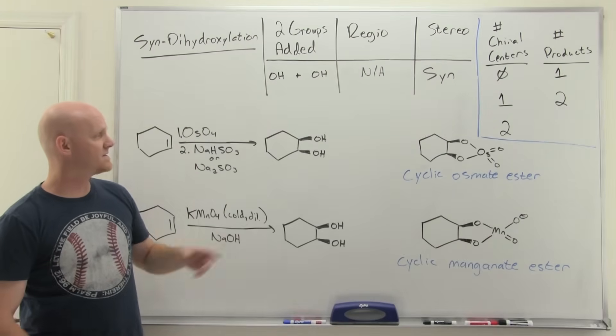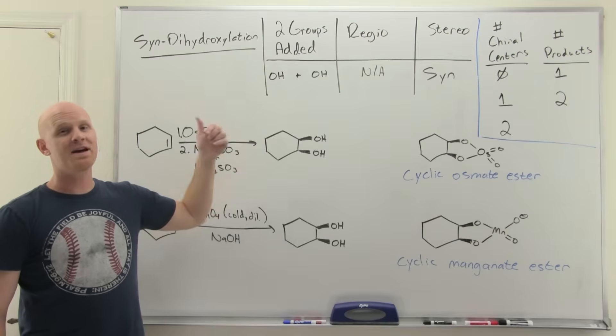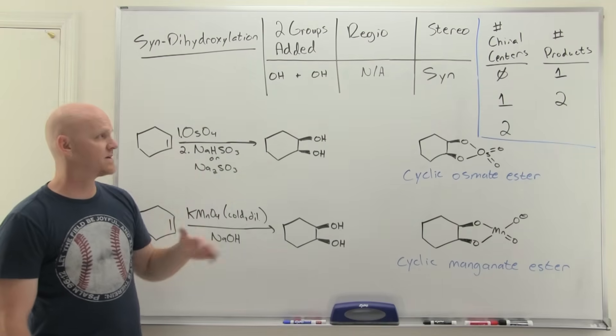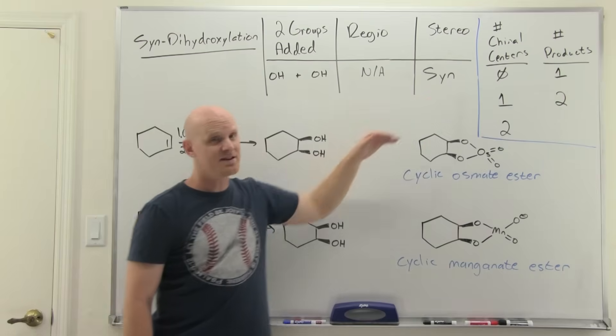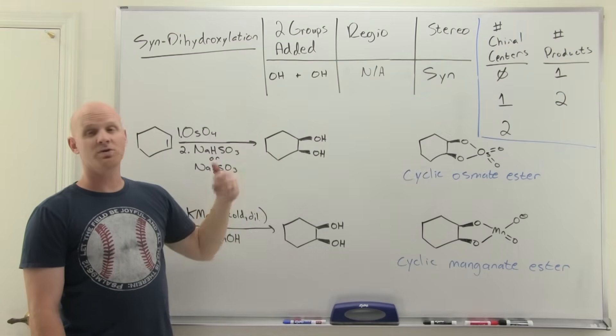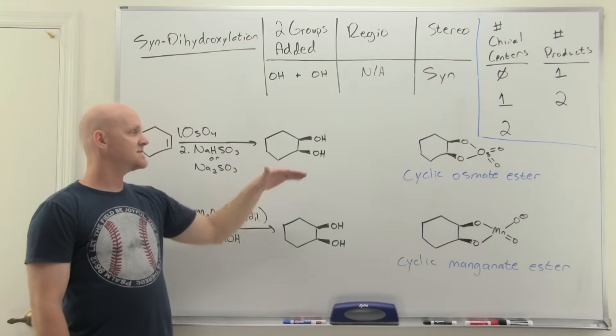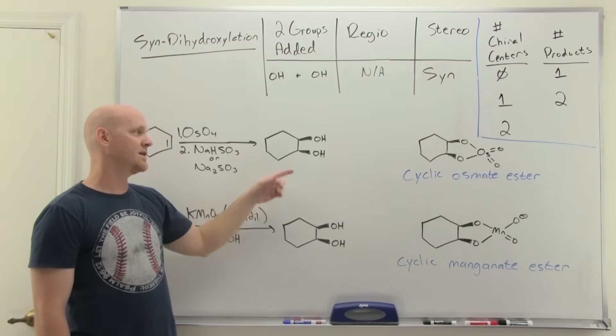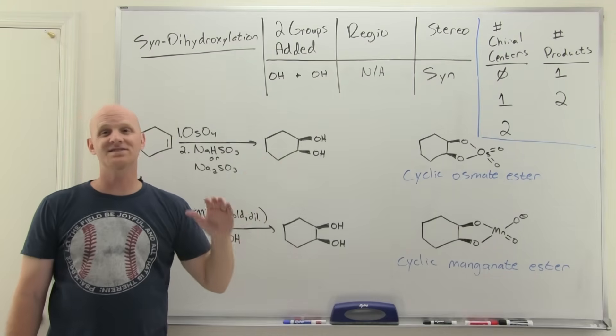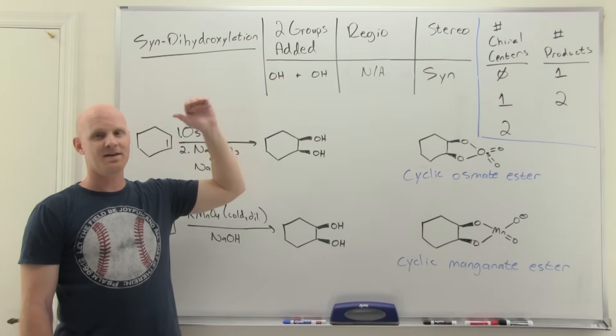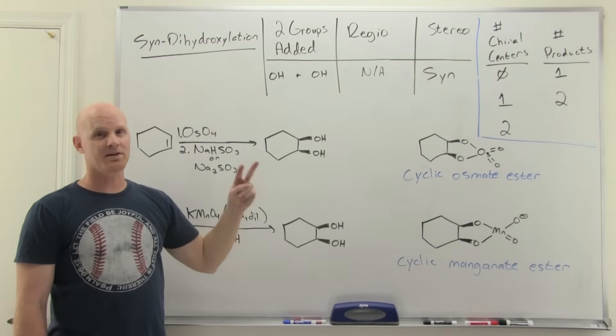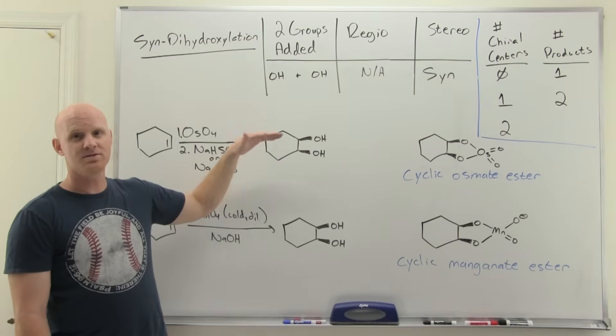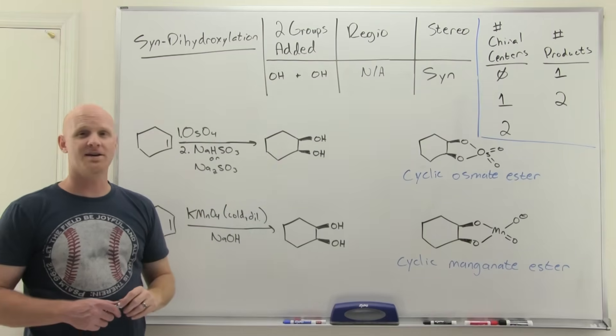One last thing I want to point out here is that where we added the two OHs, they both are chiral centers. When you form two chiral centers, that's where your stereo selectivity matters. In this case, being a syn addition, we had to show the OHs as both wedges or both dashes. But in this case, look at that plane of symmetry. This molecule is achiral. It's a meso compound. Whether you make them both wedges or both dashes, it's the same thing. We expected two products with two chiral centers and syn addition. We're only getting one due to actual formation of a meso compound in this case.